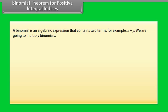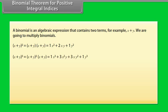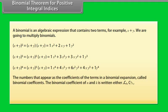Binomial theorem for positive integral indices. A binomial is an algebraic expression that contains two terms. For example, x + y. We are going to multiply binomials. The numbers that appear as the coefficients of the terms in a binomial expansion are called binomial coefficients. The binomial coefficient of n and k is written either as nCk.